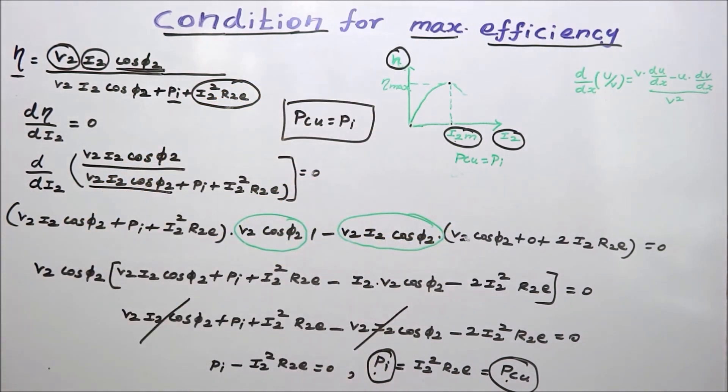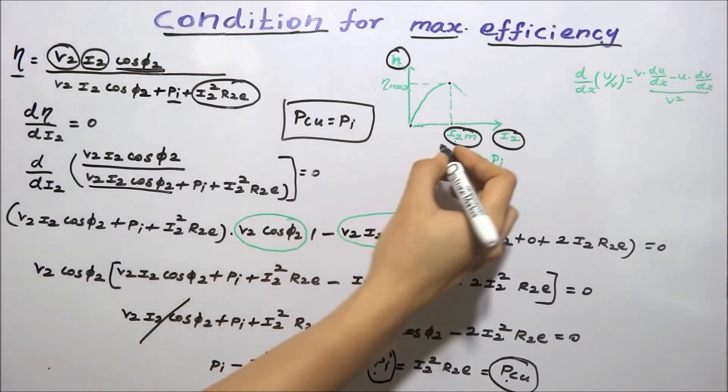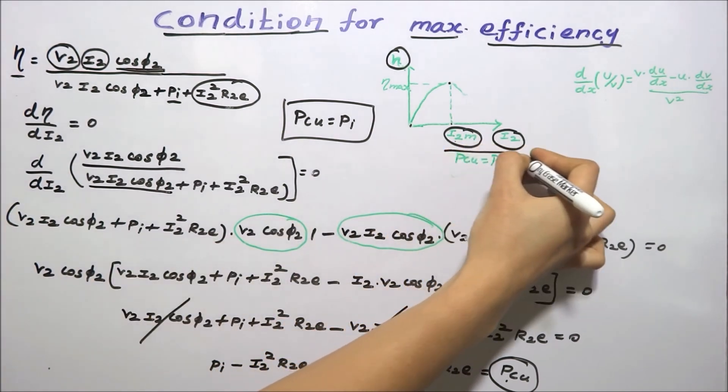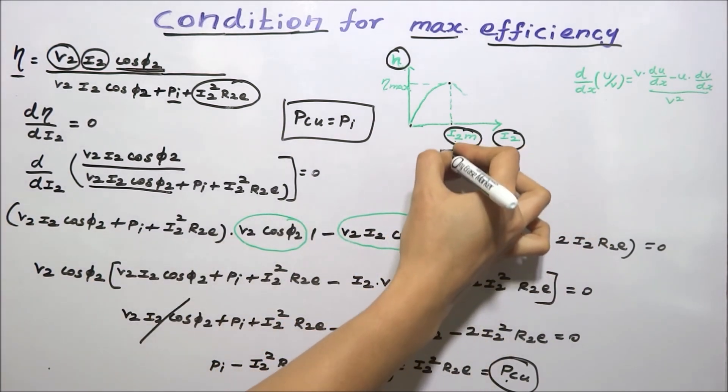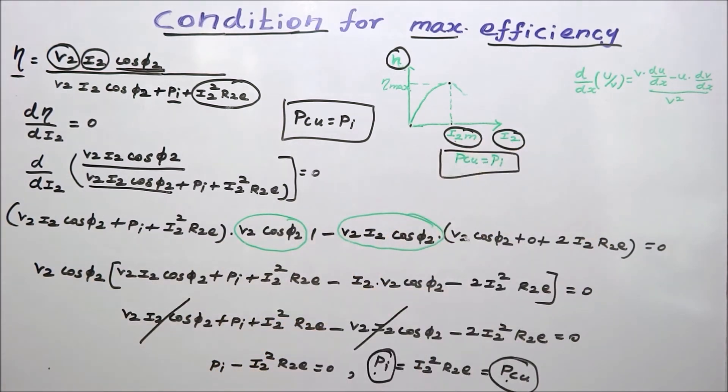The final condition is: the copper loss should be equal to the iron loss. Thanks for watching this video.